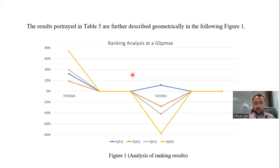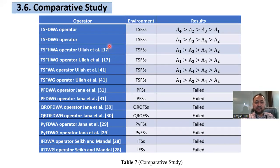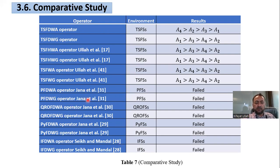We also conducted a comparative study where we applied other T-spherical fuzzy aggregation operators on the given example. We observed that previously developed Dombi aggregation operators from references 28, 29, 30, and 31 are not applicable to T-spherical fuzzy information, which demonstrates the superiority and necessity of using the concept of T-spherical fuzzy sets.